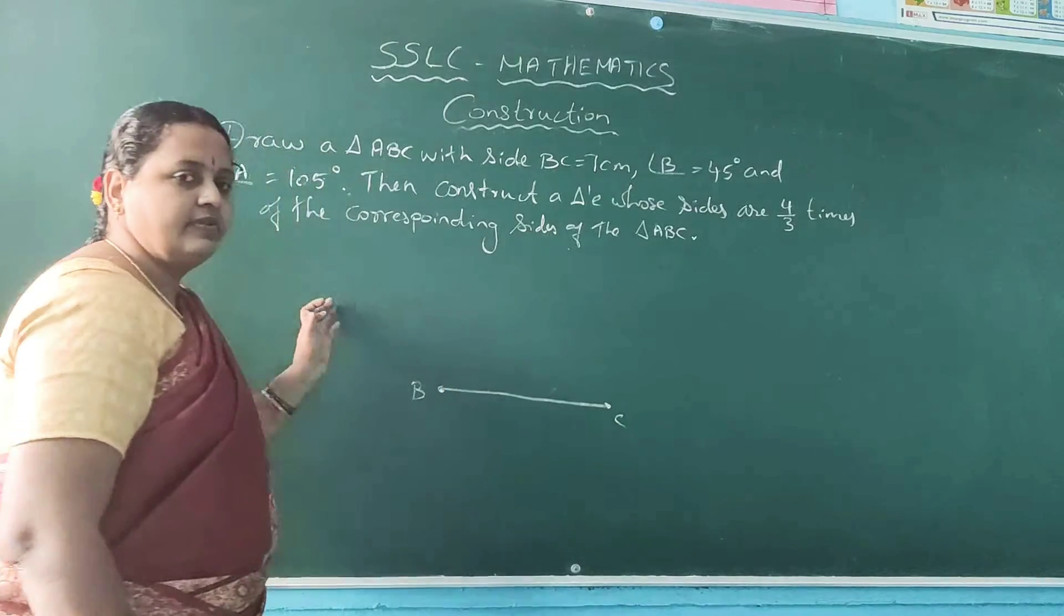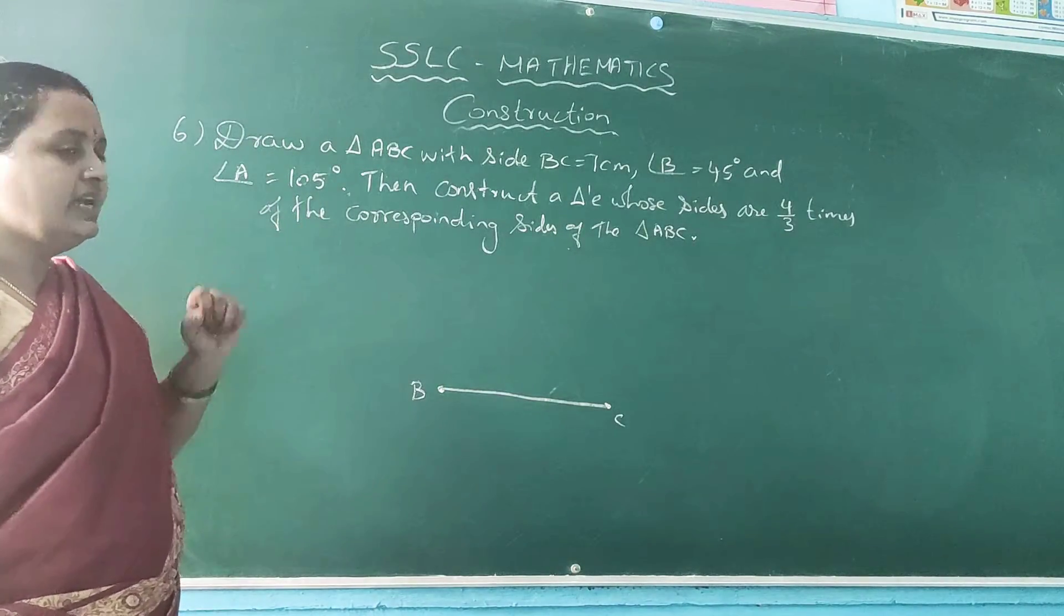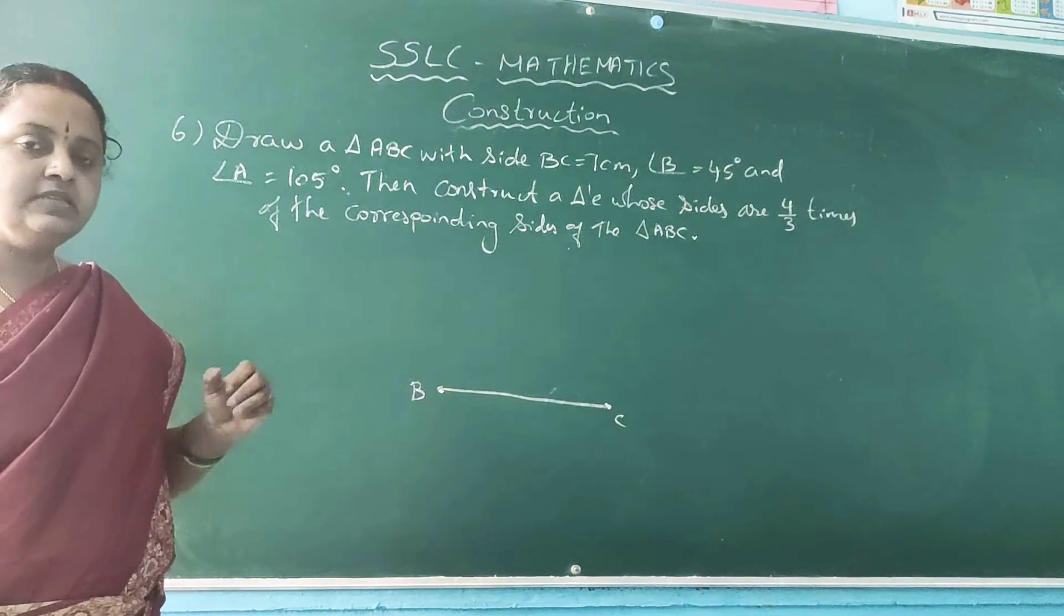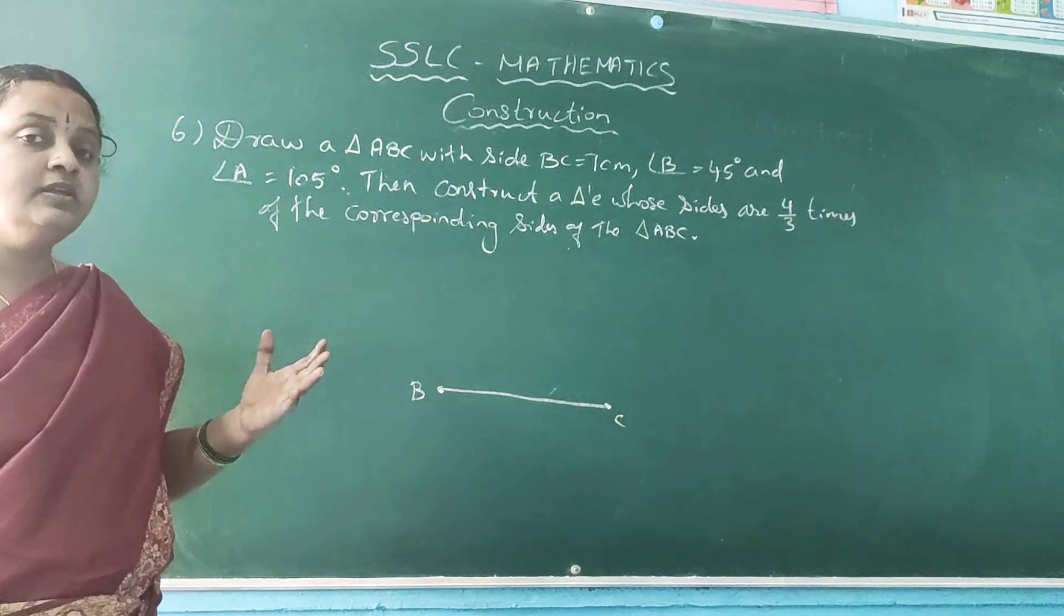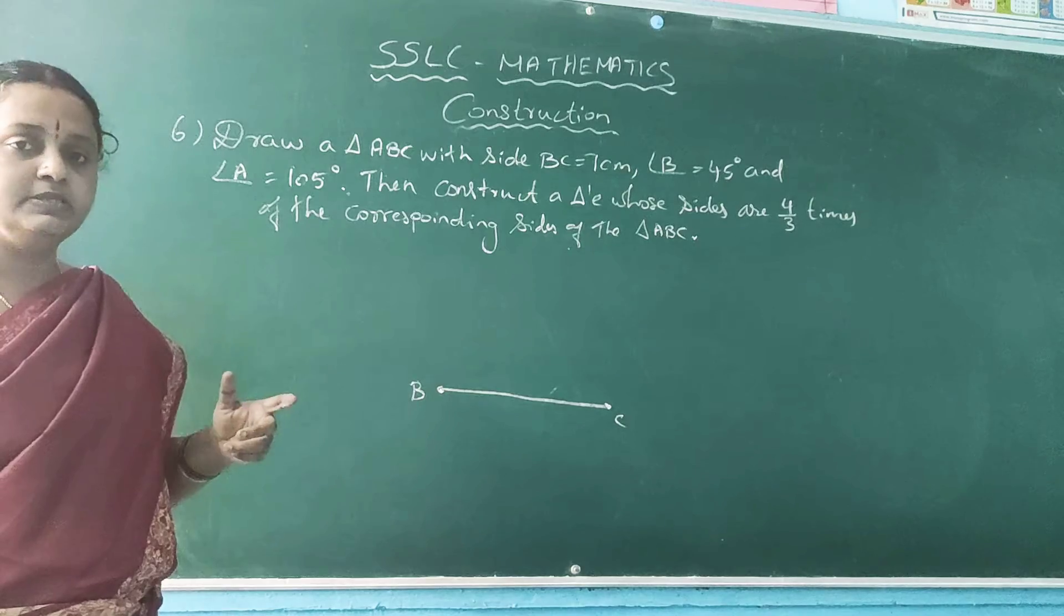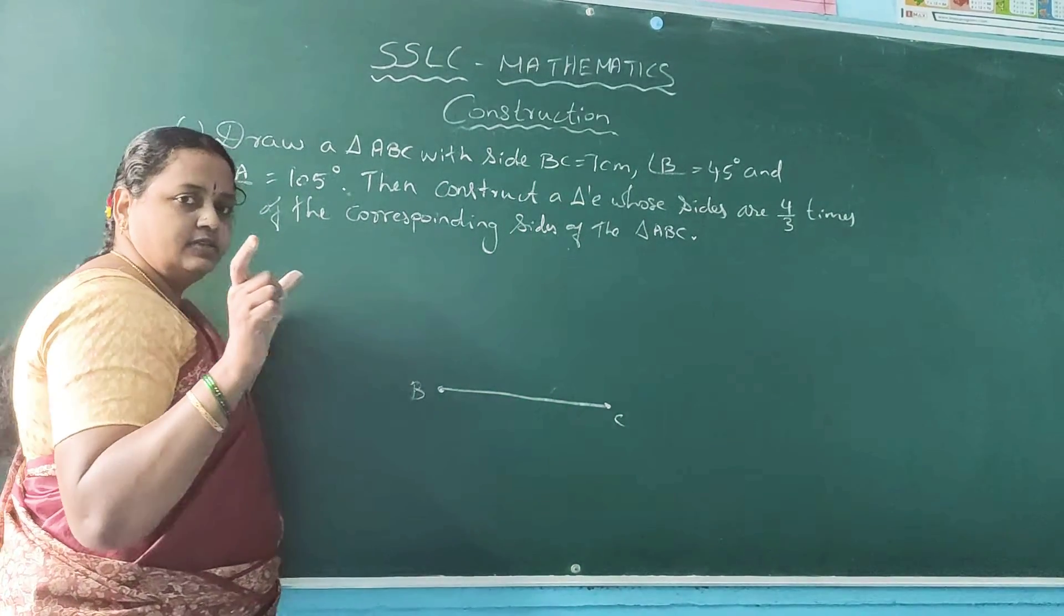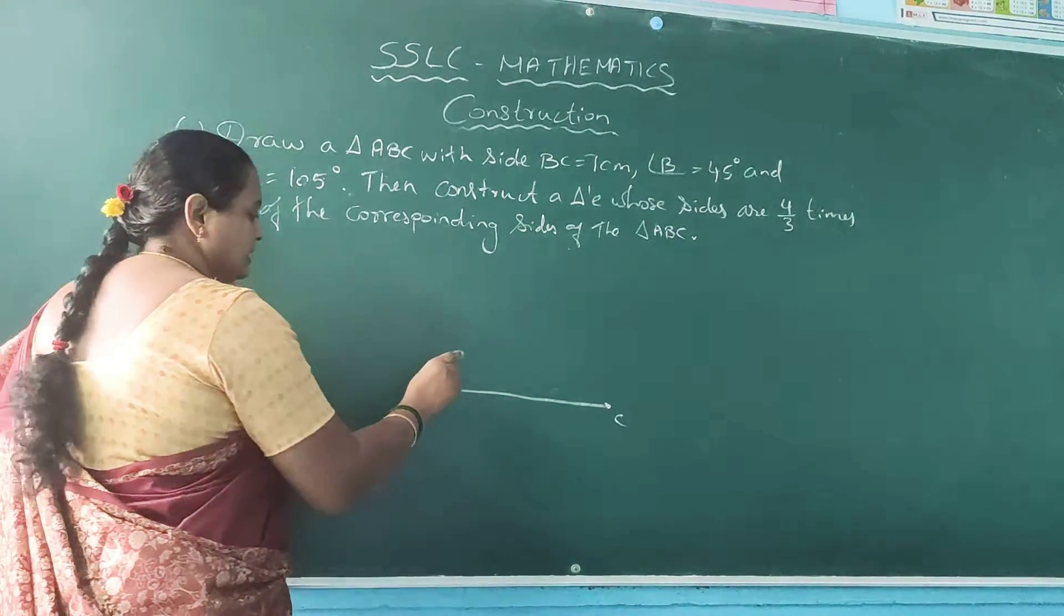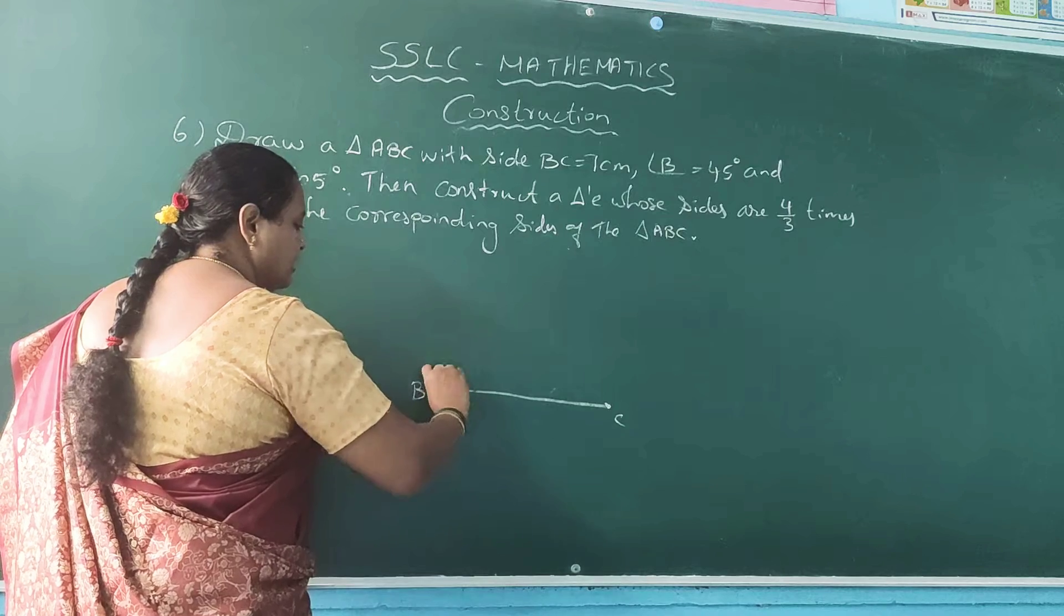Then angle B is 45 degree. As I already said how to measure, how to draw angle with the help of compass. So take suitable measurement. Keep your compass needle here. Draw a semicircle.